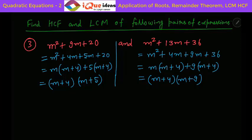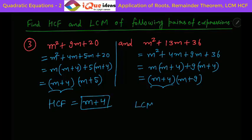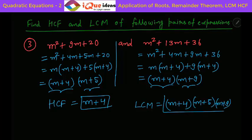Now HCF of these two expressions — the thing that is common is m plus 4, so HCF is m plus 4. And LCM — whatever is common comes once, so m plus 4 into m plus 5 from the first and m plus 9 from the second. So LCM is m plus 4 into m plus 5 into m plus 9.